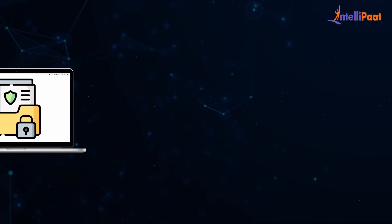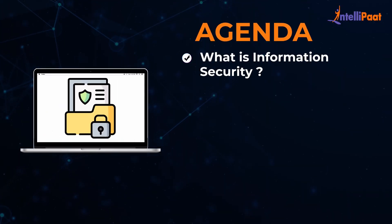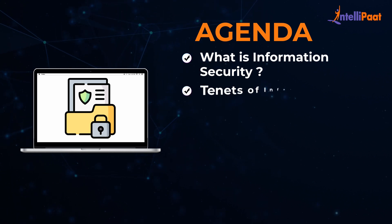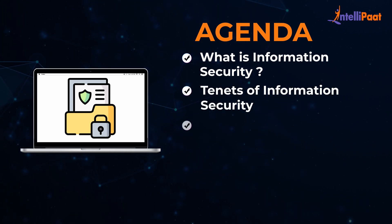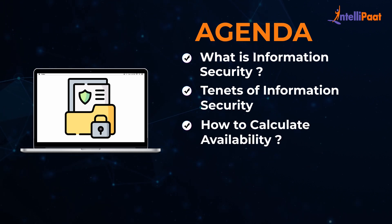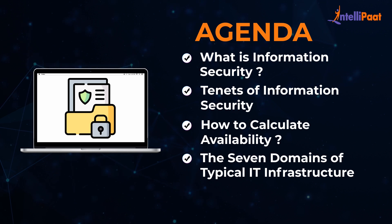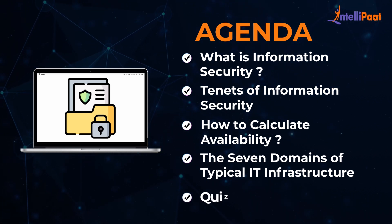First we are going to start with what is information security. Moving ahead we are going to discuss the tenets of information security. Then we are going to learn about how to calculate availability. Then we are going to learn about the seven domains of a typical IT infrastructure, and at the end we will close our session with a short quiz.